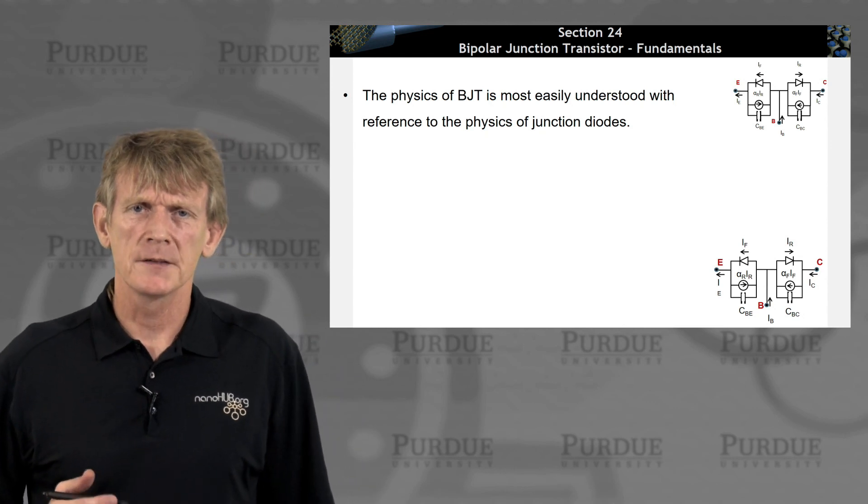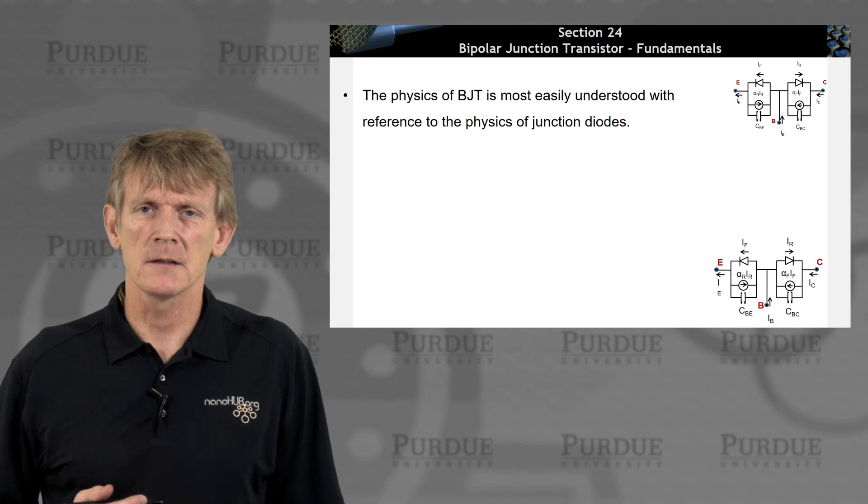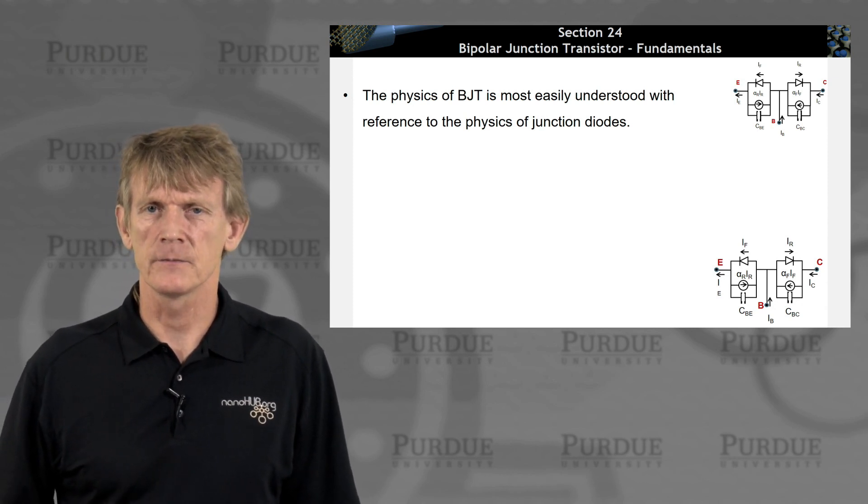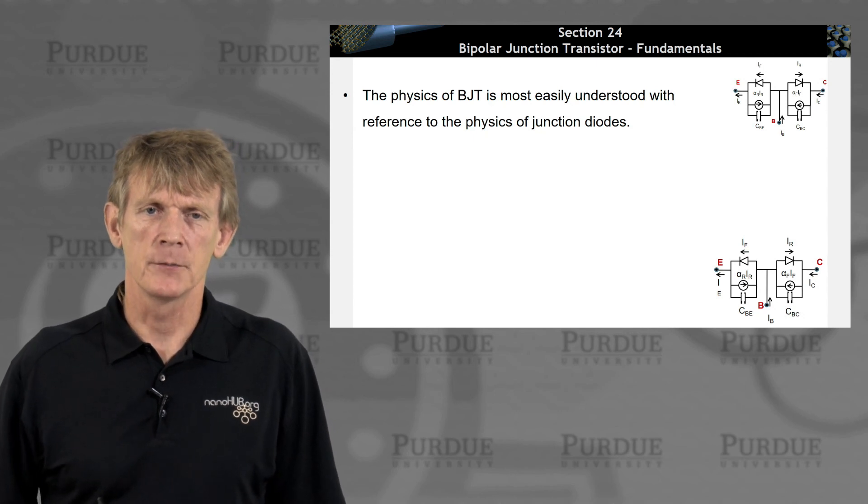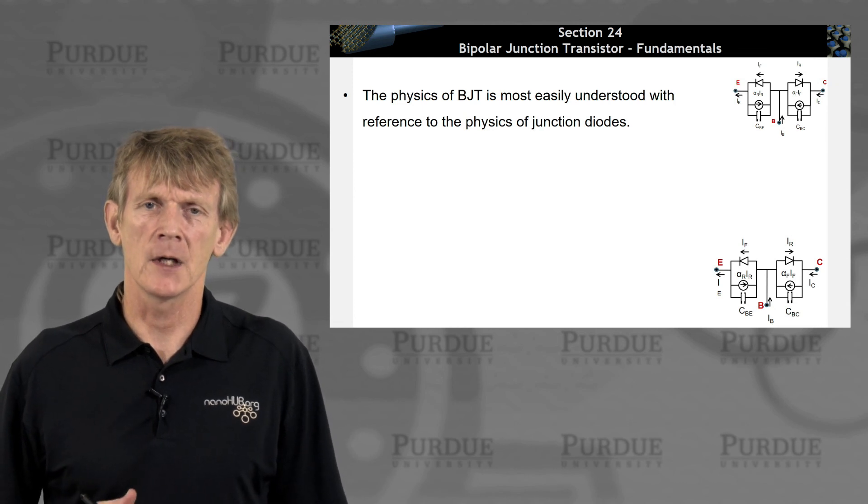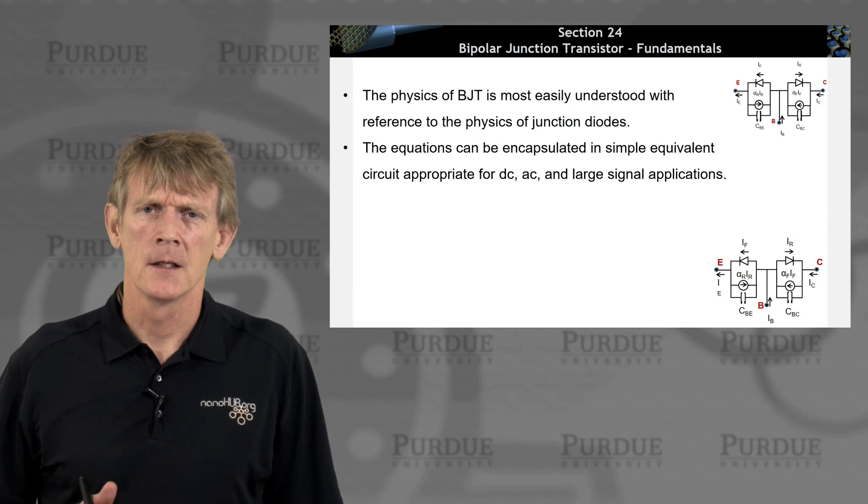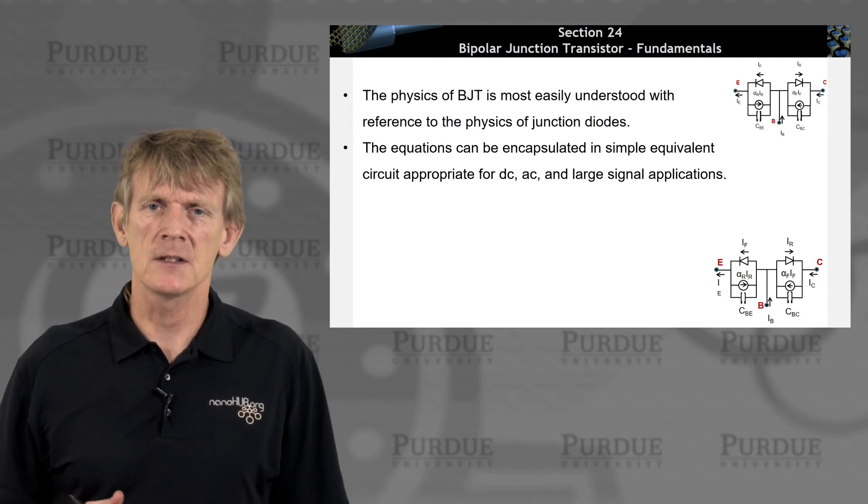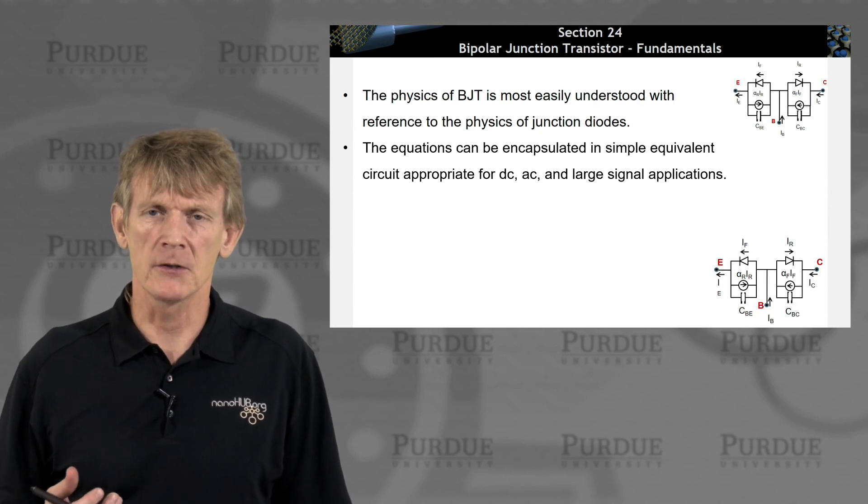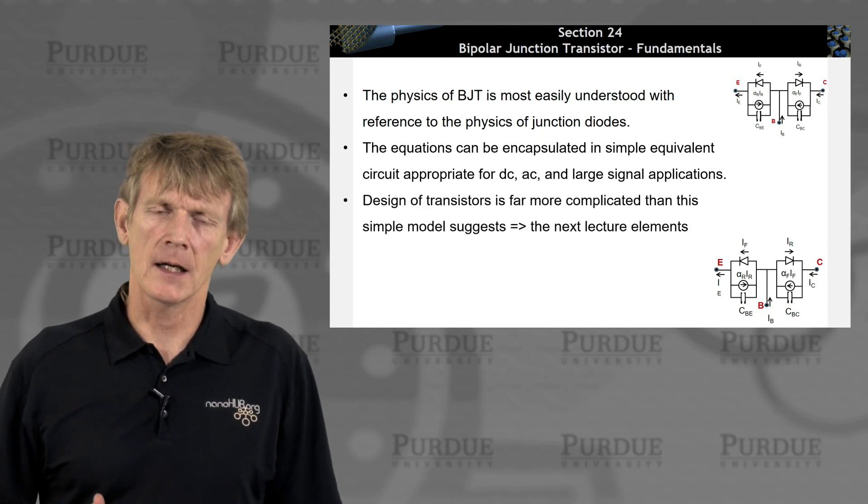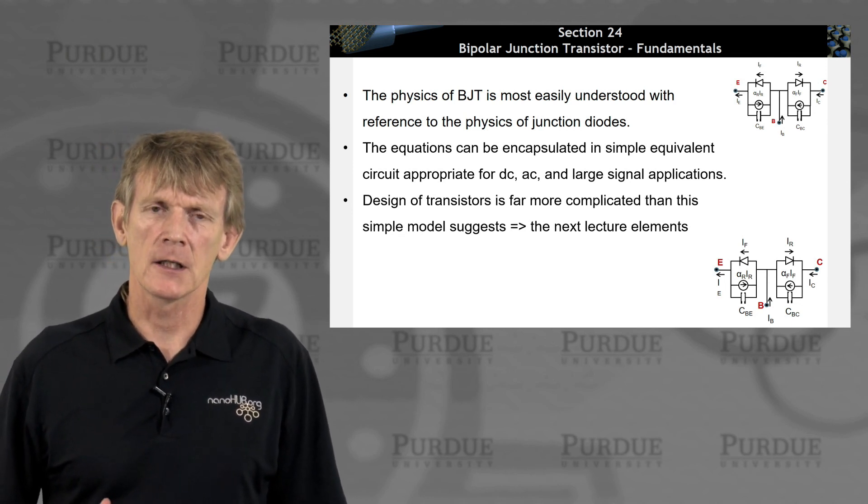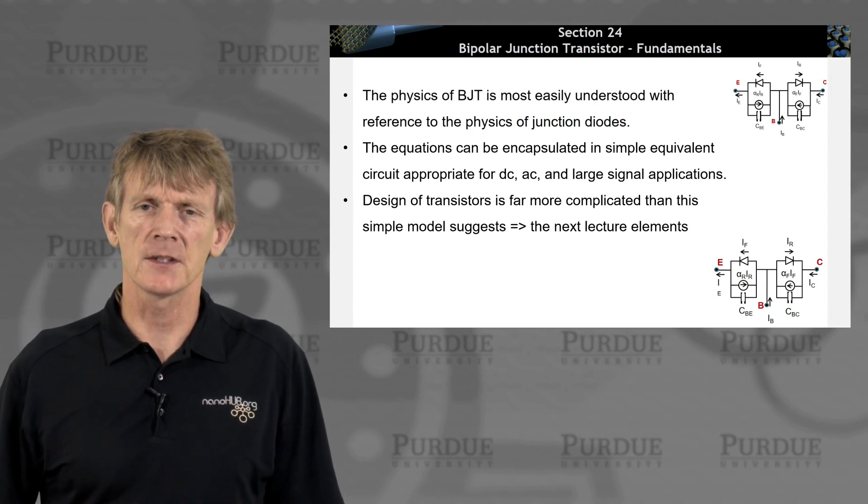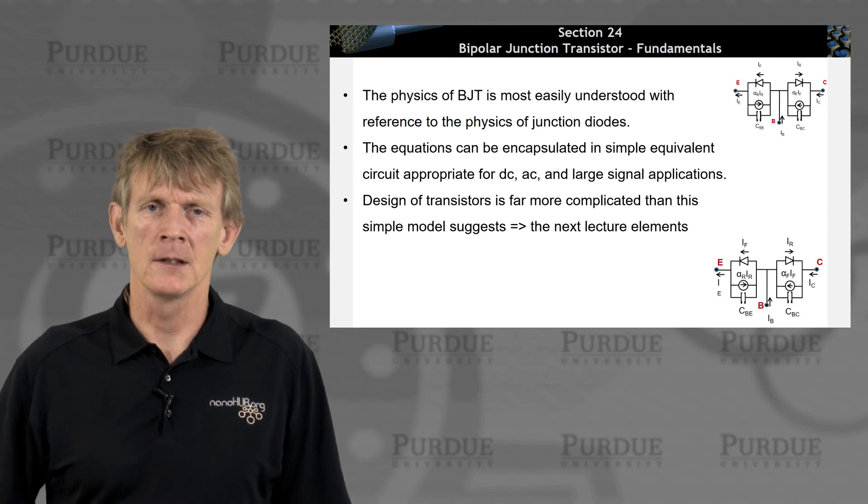So let me summarize the fundamentals here. The physics of a BJT is mostly, or easily understood with references to the physics of p-n junctions. I haven't really re-derived anything here. I'm just plucking in the raisins of the beautiful theory that we have done before. So I can just really benefit from understanding these devices in the p-n junction. So we have simple equivalent circuits for DC, AC, and for large signal applications. They are all going to be really similar. And it's kind of easy to understand this device now. But if you really want to design it, then it's going to get quite complicated and interesting because there's a couple of subtle effects that you may not quite anticipate from the very simple and very appealing theory of the BJT. And we'll talk about that in the next lecture elements.